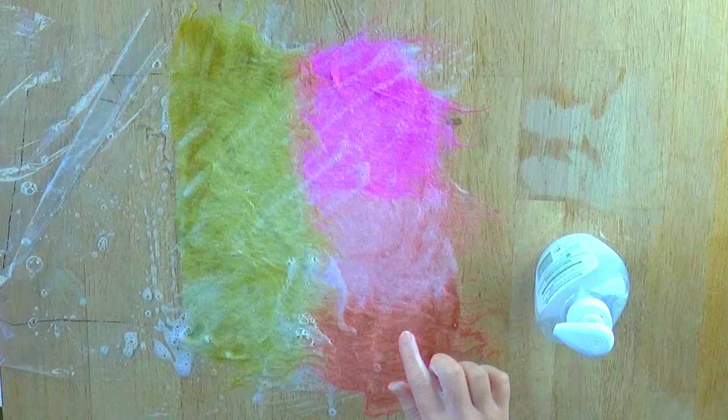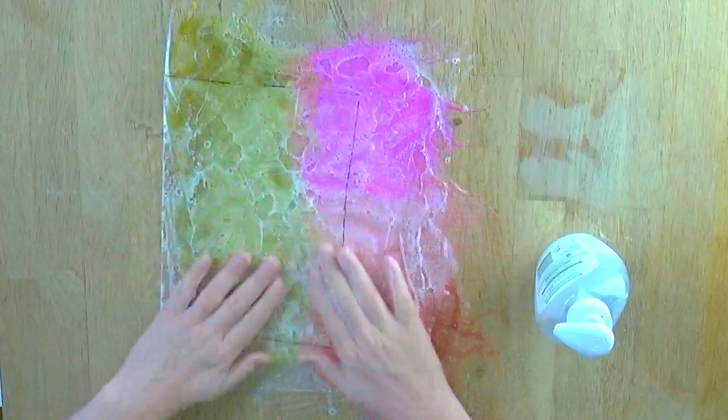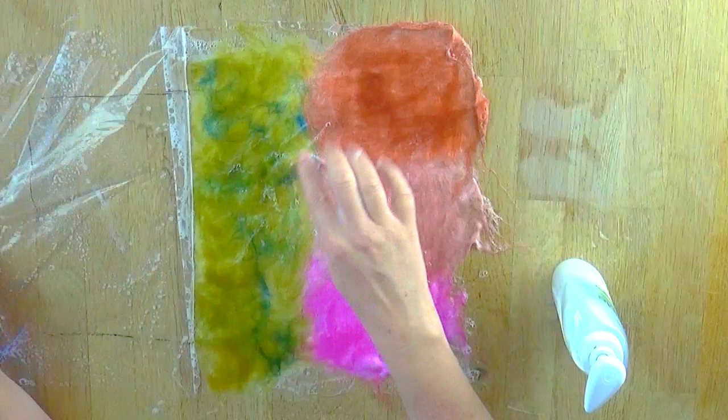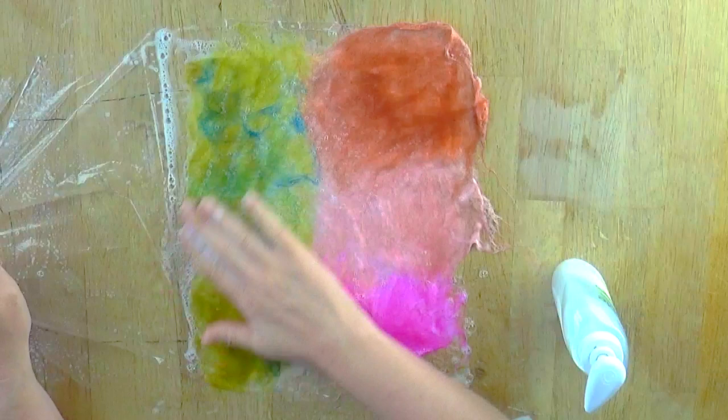We now need to do the same on the other side. And to allow us to flip it, I'm just going to replace the plastic over the surface and turn. And you should be able to see from this side, the silk has started to become one with the wool behind. Just take it easy on this area here where there's silk.